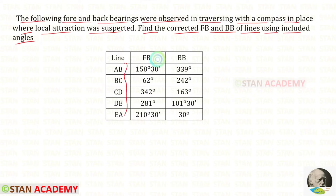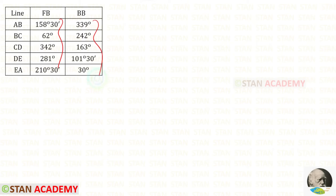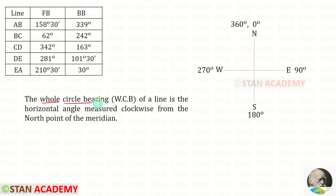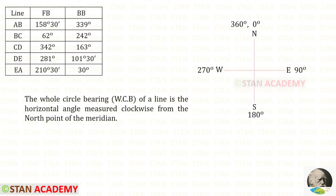The lines are given, and for each line the fore bearing and back bearing are given. Now using the fore bearings we can draw the traverse. We know that these readings are given in whole circle bearing. The whole circle bearing of a line is the horizontal angle measured clockwise from the north point of the meridian, so all readings should start from the north.